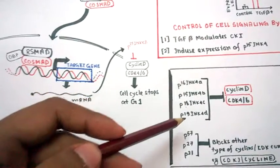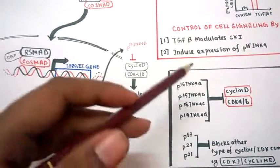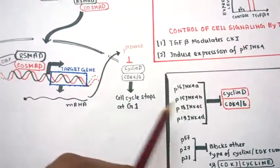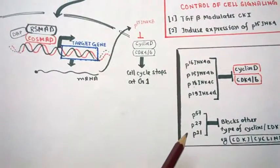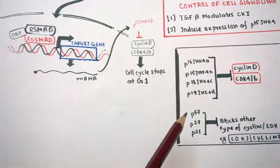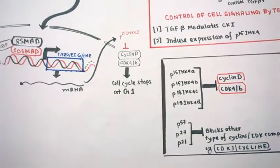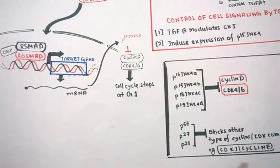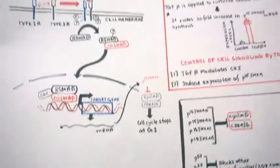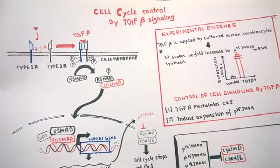Others like P27, P21, and P57 inhibit other cyclin CDK complexes such as cyclin E and CDK2 complexes. This is very important in cell cycle control because cell division cannot last all the time.